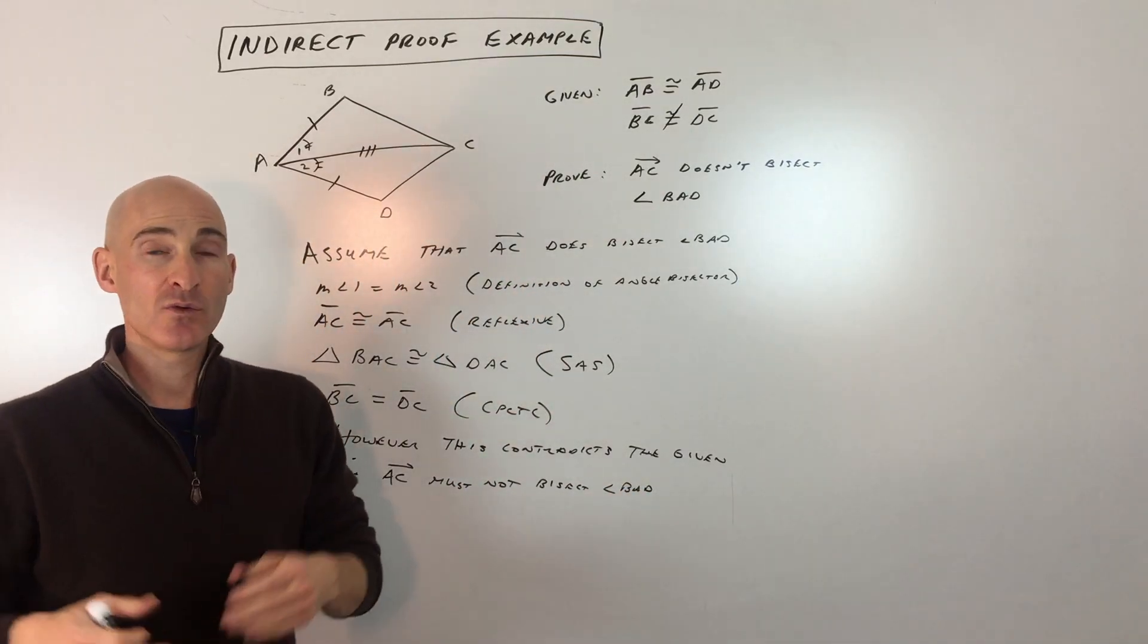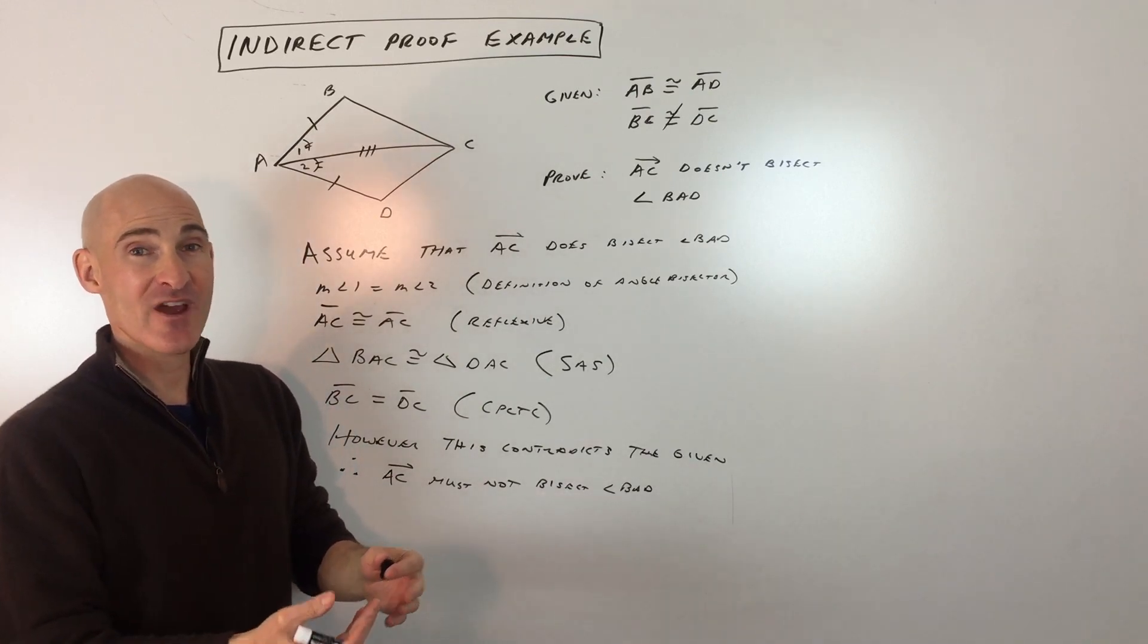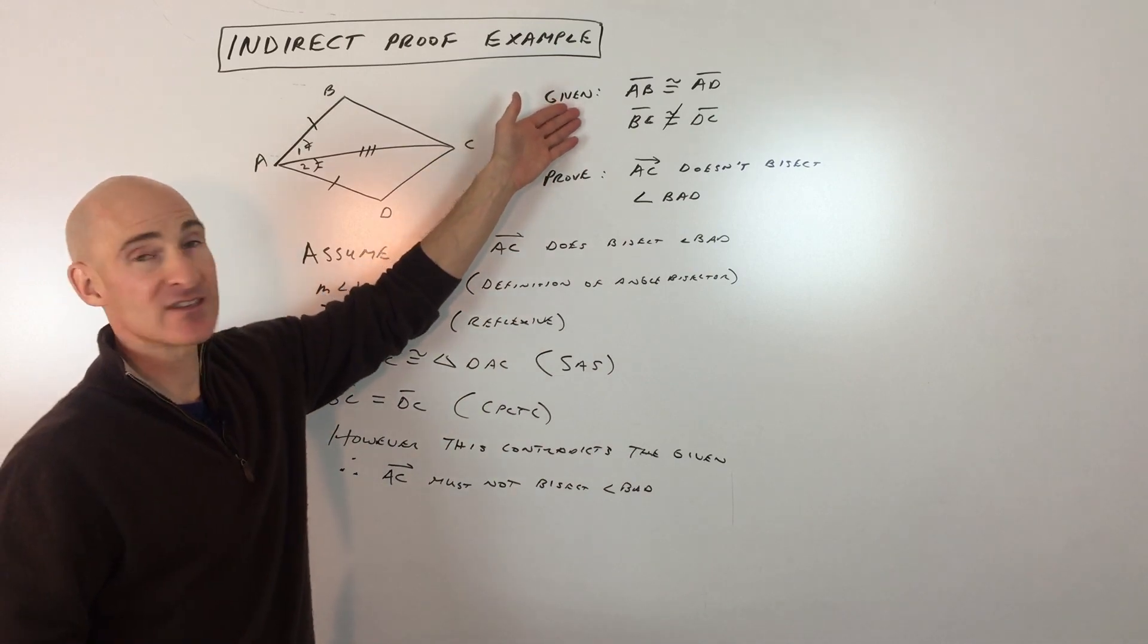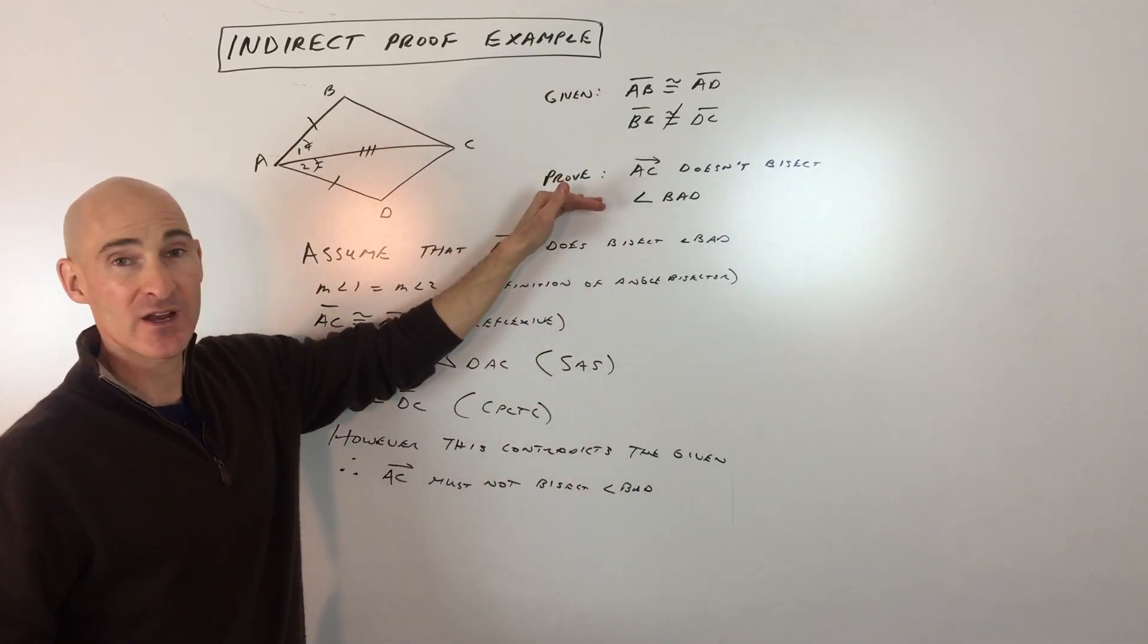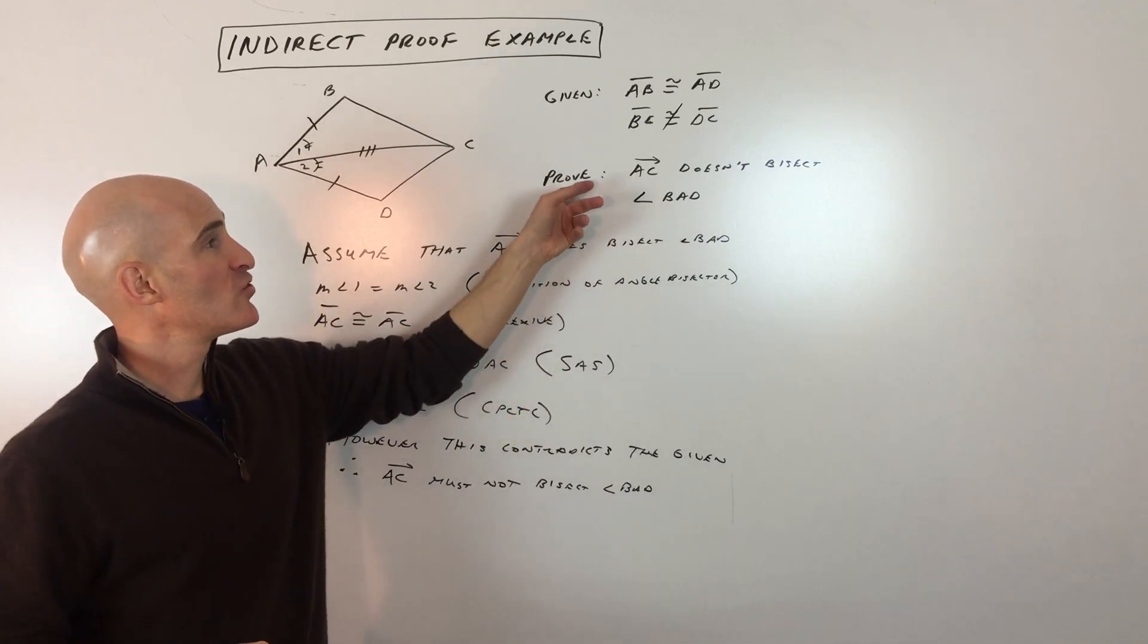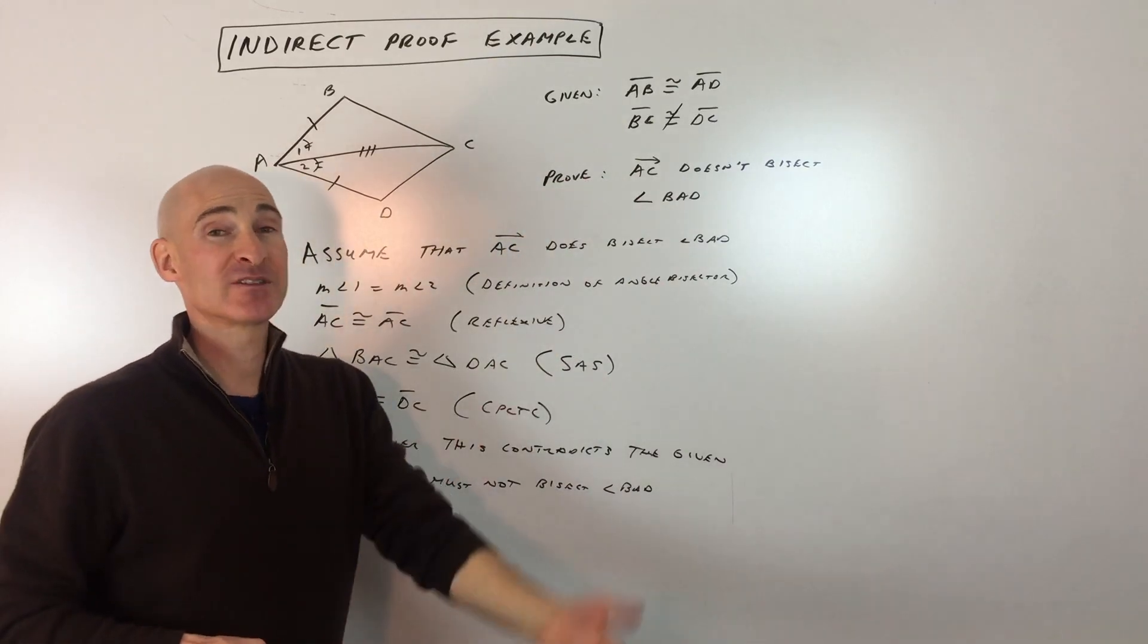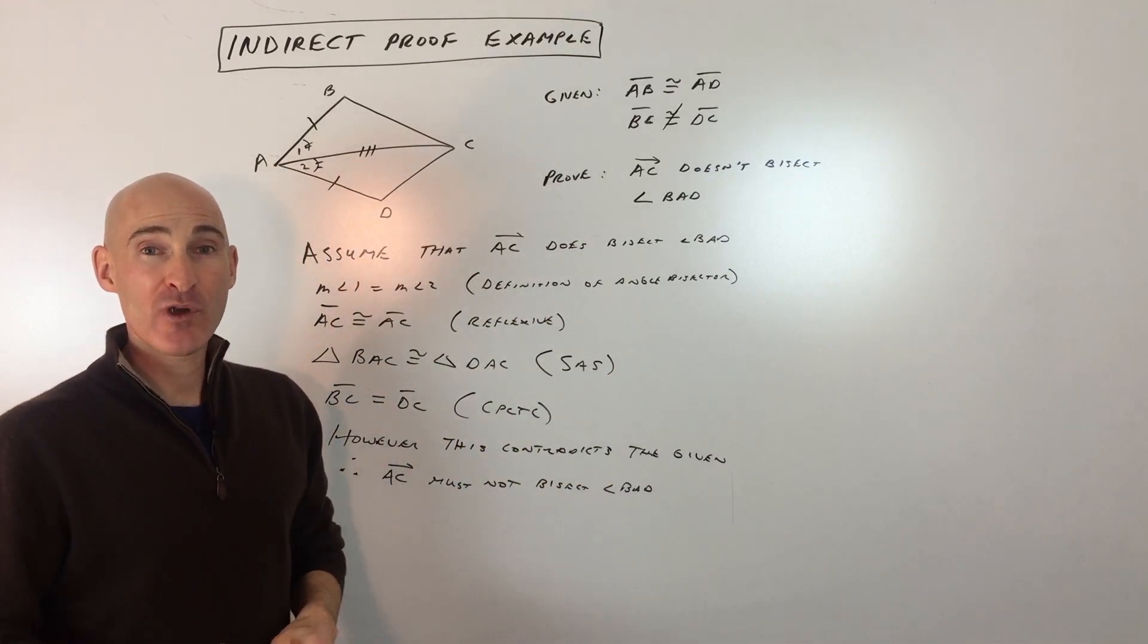What we did, and what you do with an indirect proof, is go about it in an indirect way. Instead of starting from the givens like we normally do in a proof and reasoning logically until we get to what we're trying to prove, we assume that the opposite of what we're trying to prove is true.